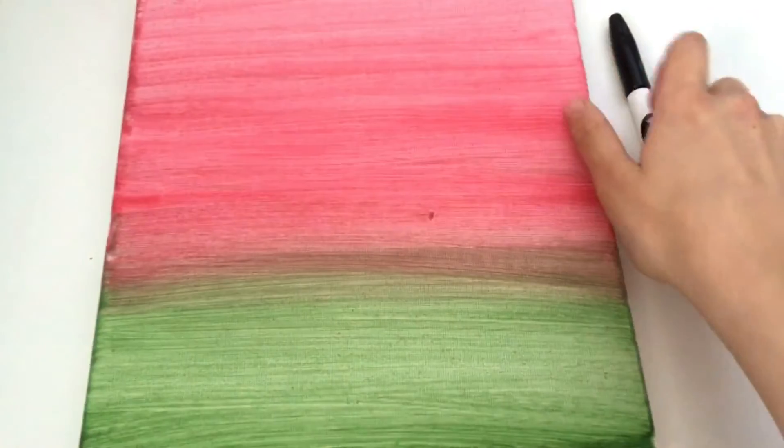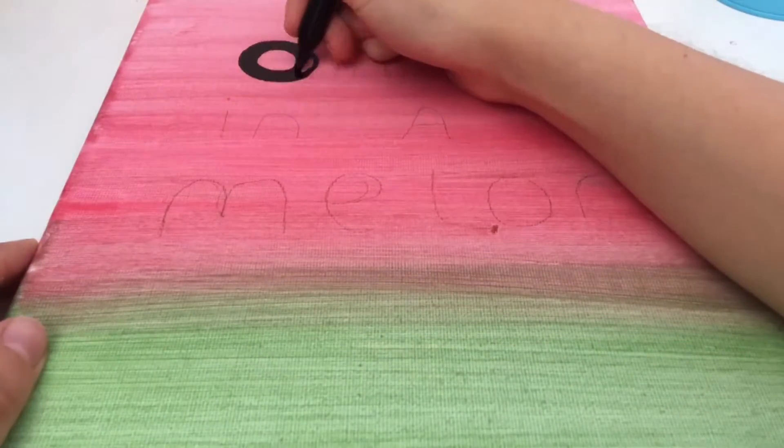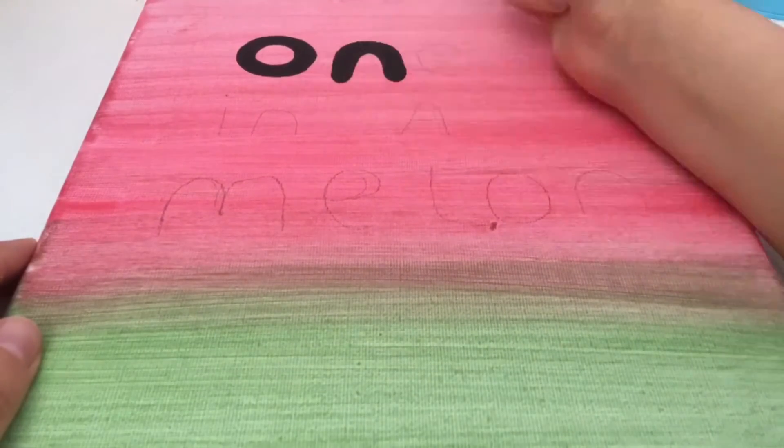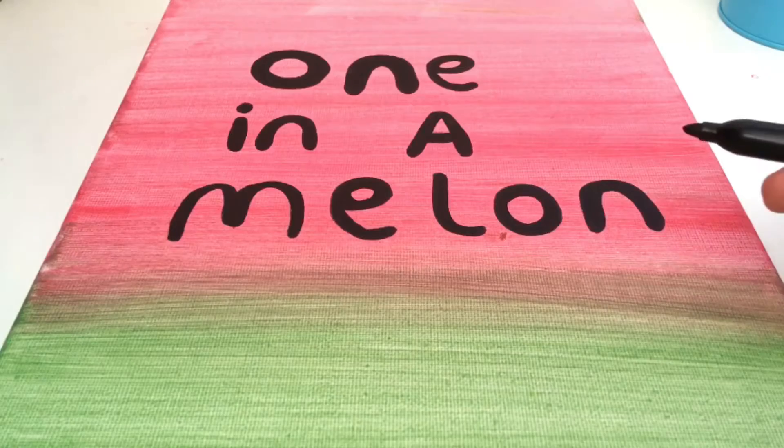Here is my dried canvas. I'm going to write on it using pen. Finally I'm going to draw some watermelon seeds.